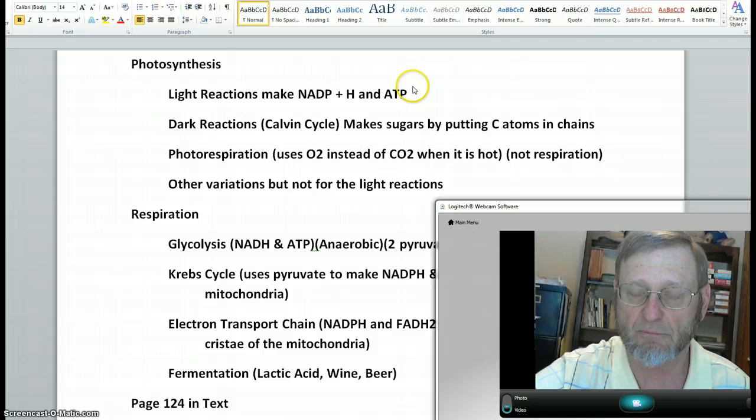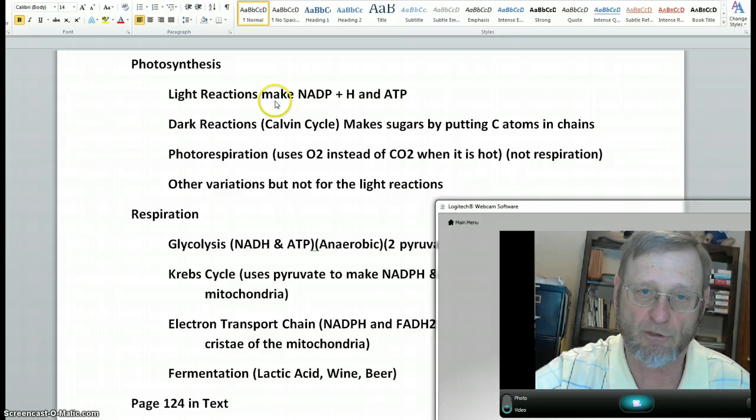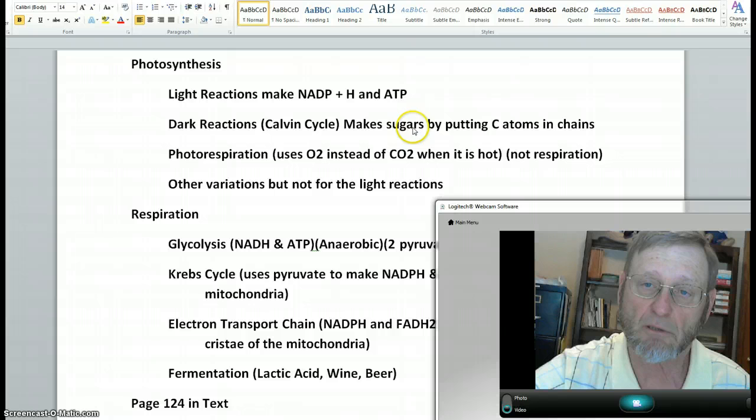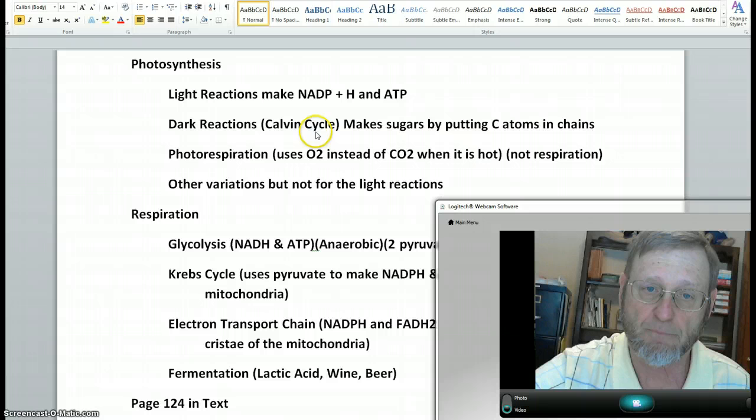They use carbon dioxide and give off oxygen, but the dark reactions, after this is made, take the carbon atoms and put them in chains to make the actual sugars. This is called the Calvin cycle, so it's a second step. It does not require the photons from the sun to do it.